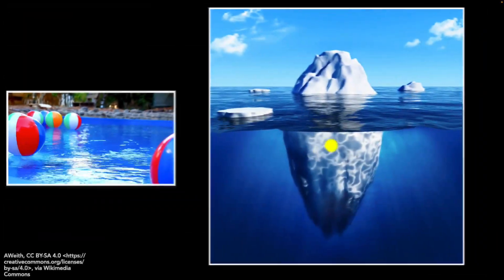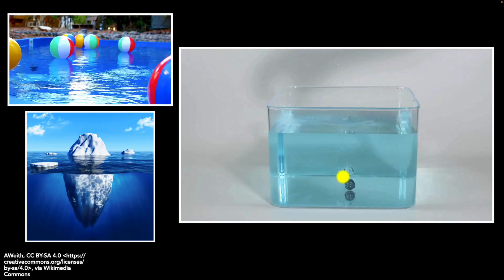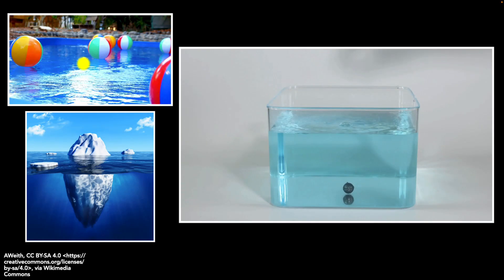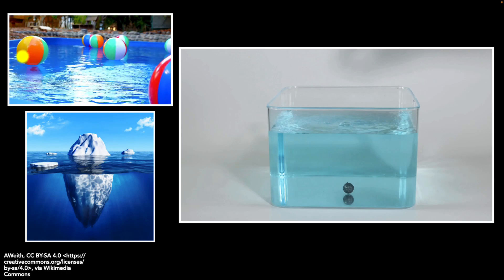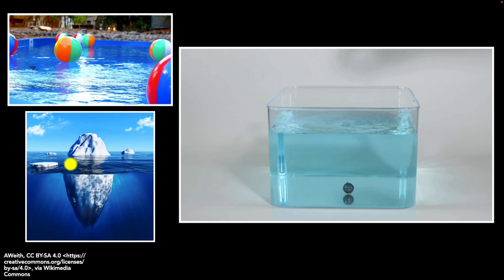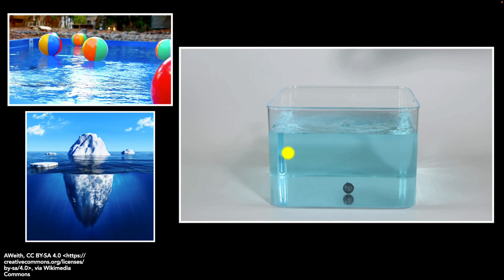Beach balls float on water. Icebergs float on water. Certain things float on water, whereas others, like a steel ball, sink. Why do certain things float and certain things sink? And also, if you consider the things that are floating, sometimes most of the object is above the water, like the beach ball. But when it comes to the iceberg, most of the object is submerged below the water. So what controls how much of that object is above and how much of it is submerged? You probably know the answer has something to do with density — but why does density matter? What is the deeper reason behind this? That's what we want to figure out in this video.